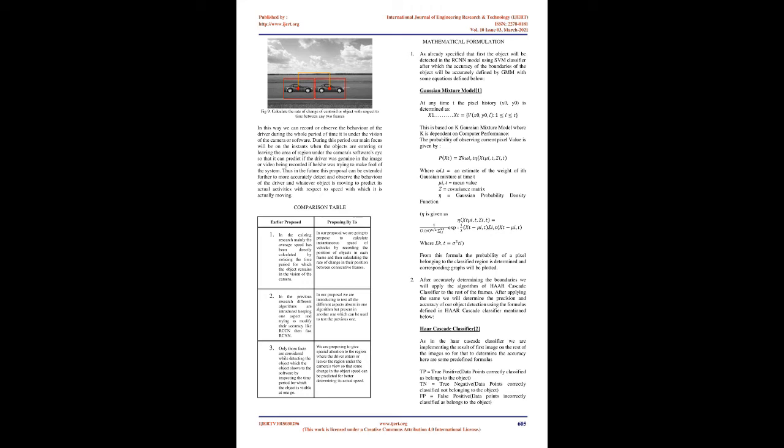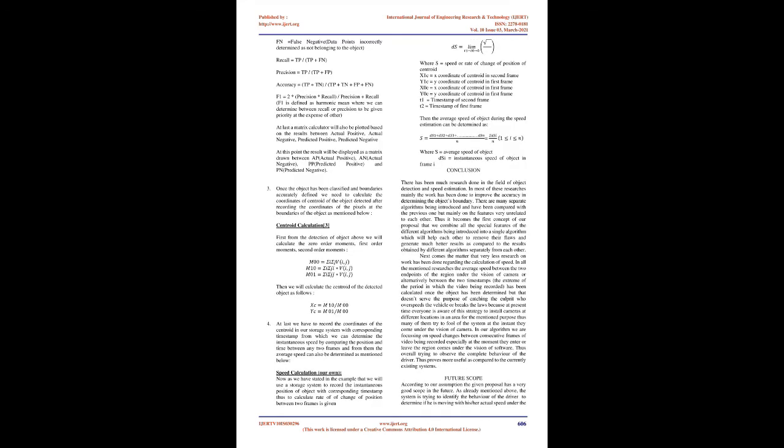Then, as the HAR classifier cascade says, we apply our training data to the rest of the frames to classify the same detected object in them. Once the object is completely defined in each frame, we record the position of all the boundary pixels of the detected object, then calculate the centroid of these pixels in each frame and record the position of the centroid with respect to the complete object in each frame. A database or file—whichever is convenient—is used to record the timestamp and position of the object in each frame. We will also try to connect the database to our LAN system so that the data will always be saved with us on regaining the connection if any network fails.